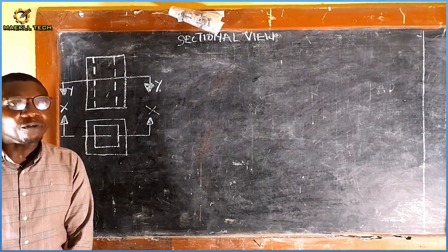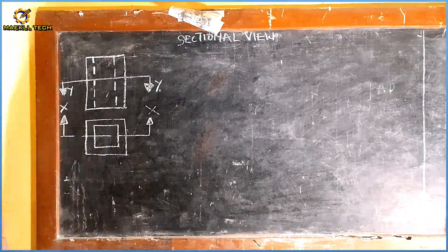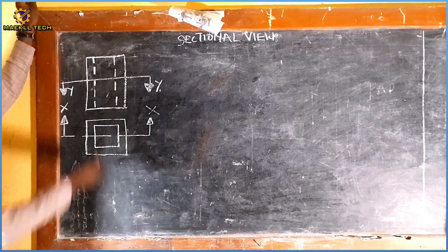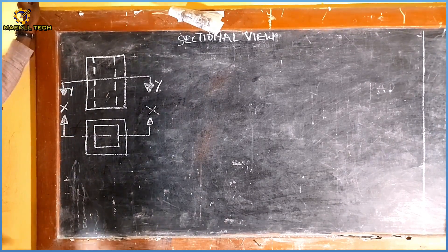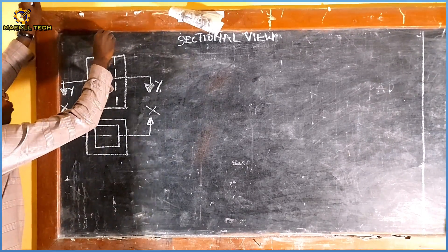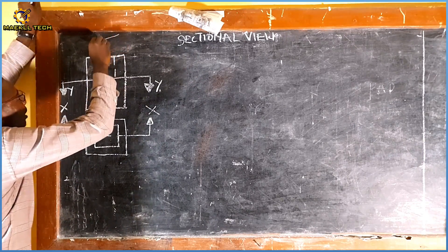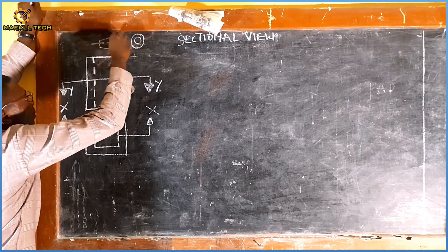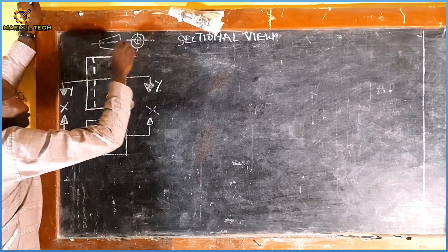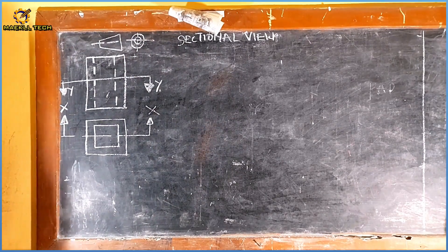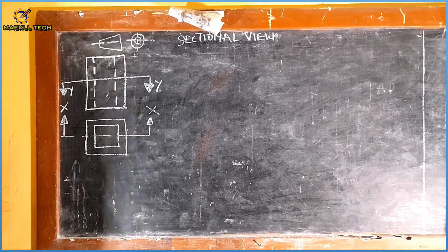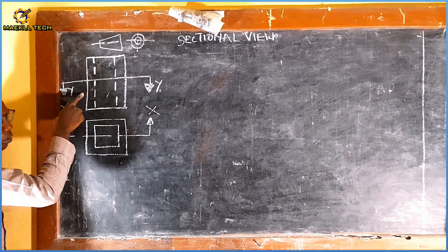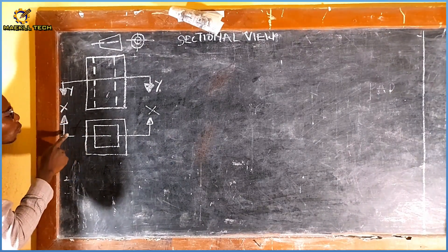Right on the board I have the front view and the plan of an object. This object is in first angle orthographic projection — this is the symbol for that. Now, in this problem on the screen, I was given the front view and the plan.